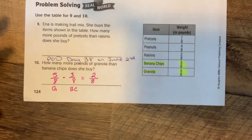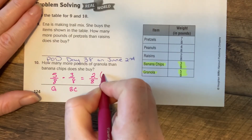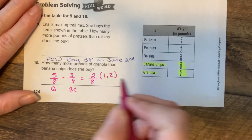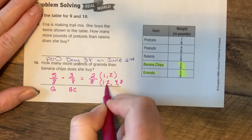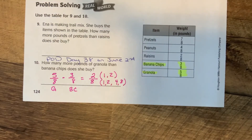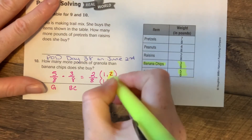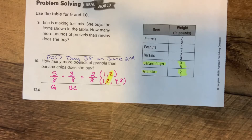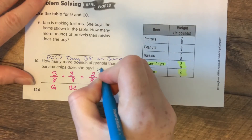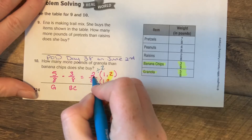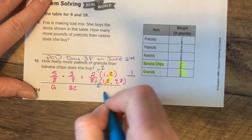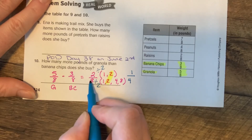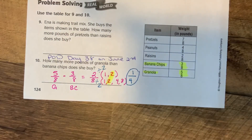Now, I'm going to always check to see if I can simplify. What are the factors of 2? 1 and 2, because 1 times 2 is it. What about 8? 1 times 8, 2 times 4, and that's it. Do they have anything in common other than 1? They have a 2 in common. Since they have a 2 in common, I can divide by 2. 2 divided by 2 and 8 divided by 2 — I have to divide the numerator by the same number that I divide the denominator by. 2 divided by 2 is 1, 8 divided by 2 is 4. So your answer is 2 eighths, but simplified, your answer is 1 fourth.